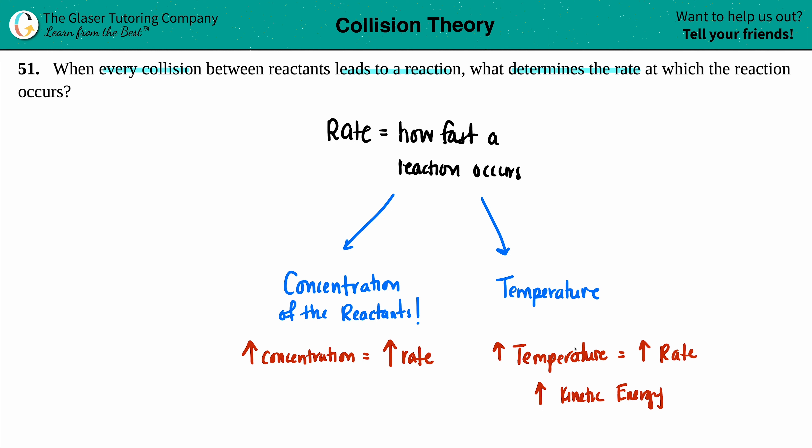And that's basically it. So if we're assuming that every time reactants collide with one another, it's going to lead to a reaction, what is determining the rate? Well, we can either increase or decrease concentrations. Increasing concentrations always will lead to a faster rate and you can manipulate the temperature. Changing the temperature, increasing it will also increase the rate, how fast that reaction occurs. And that's it.